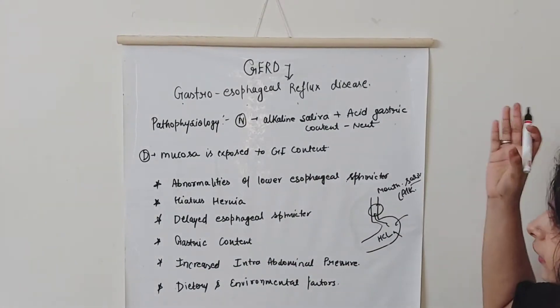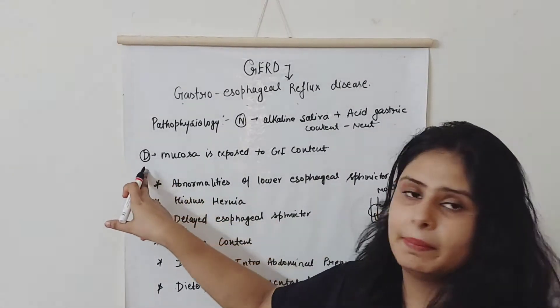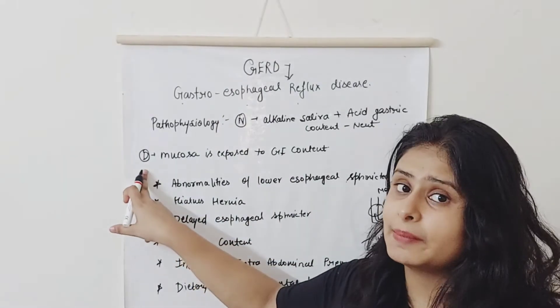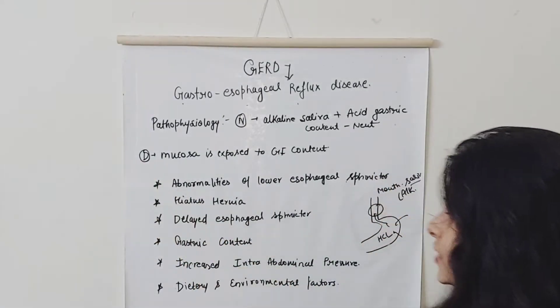But if this continues for a very long time, when does it become a disease? It becomes pathological when the lower oesophageal sphincter is involved.